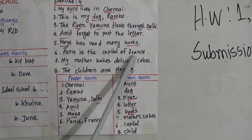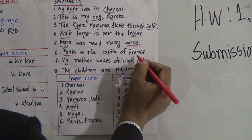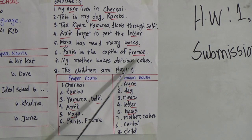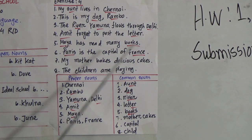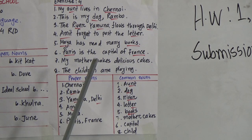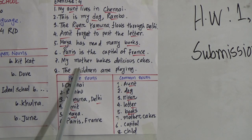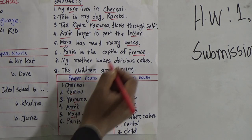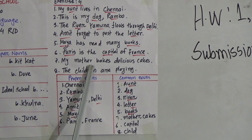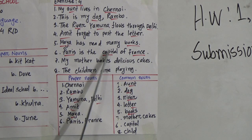Number six: Paris is the capital of France. Paris — special name. France is a special name, because Paris is a capital and France is the name of a country. So these two are special names, so they would be in proper nouns — Paris and France. But capital — capital means all the capitals, not a specific one, so it would be in common nouns.